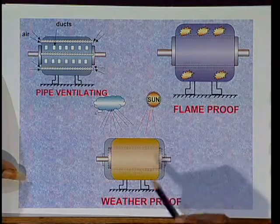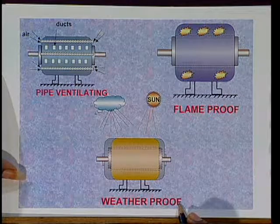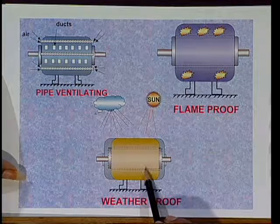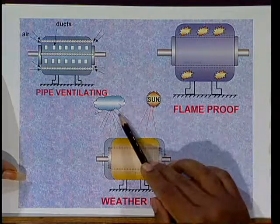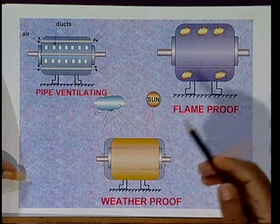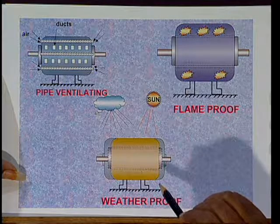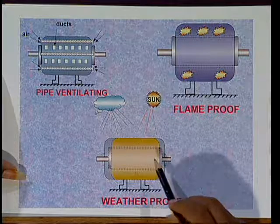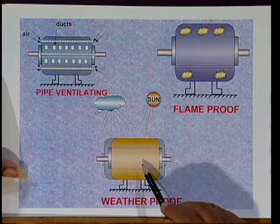The weather proof type motor is totally enclosed. The enclosures are designed such that they can withstand exposure to sun, rain, snow, dust, and other dirt particles. Generally, this type of motor is used in outdoor sites. We can see this type of motor in agriculture pump sets. These are the different types of enclosures generally observed in day-to-day life.